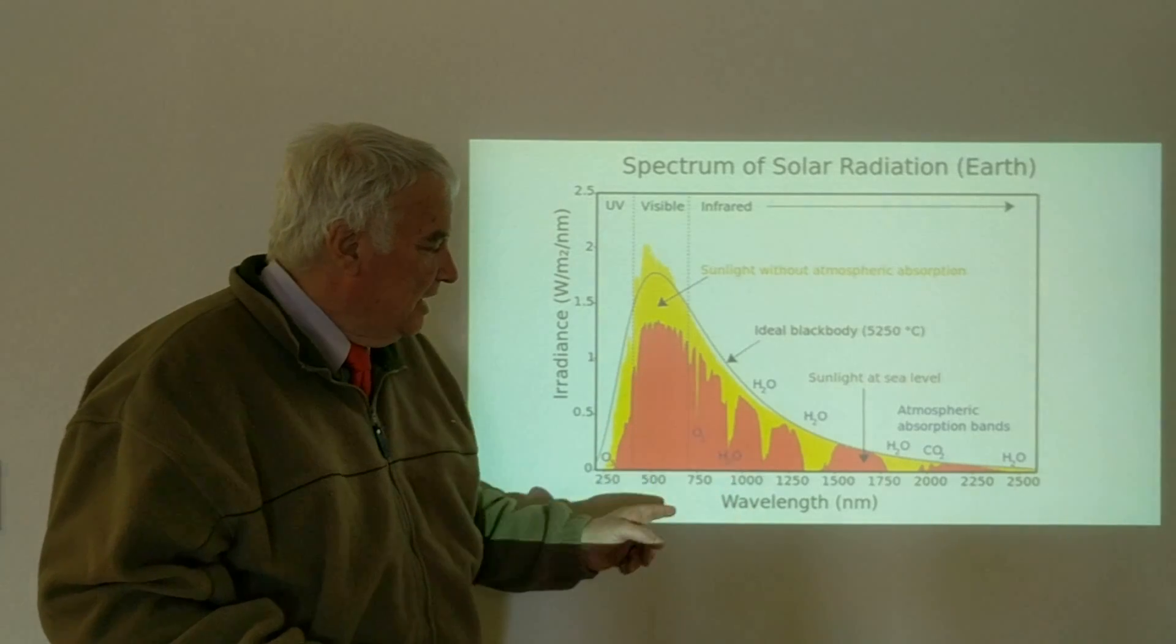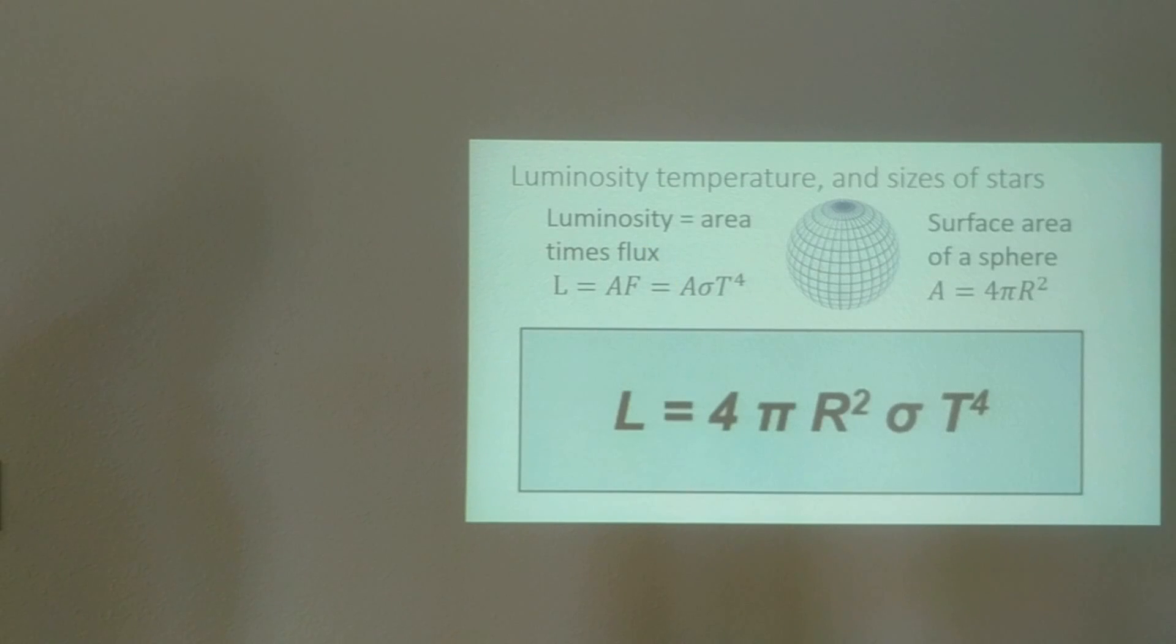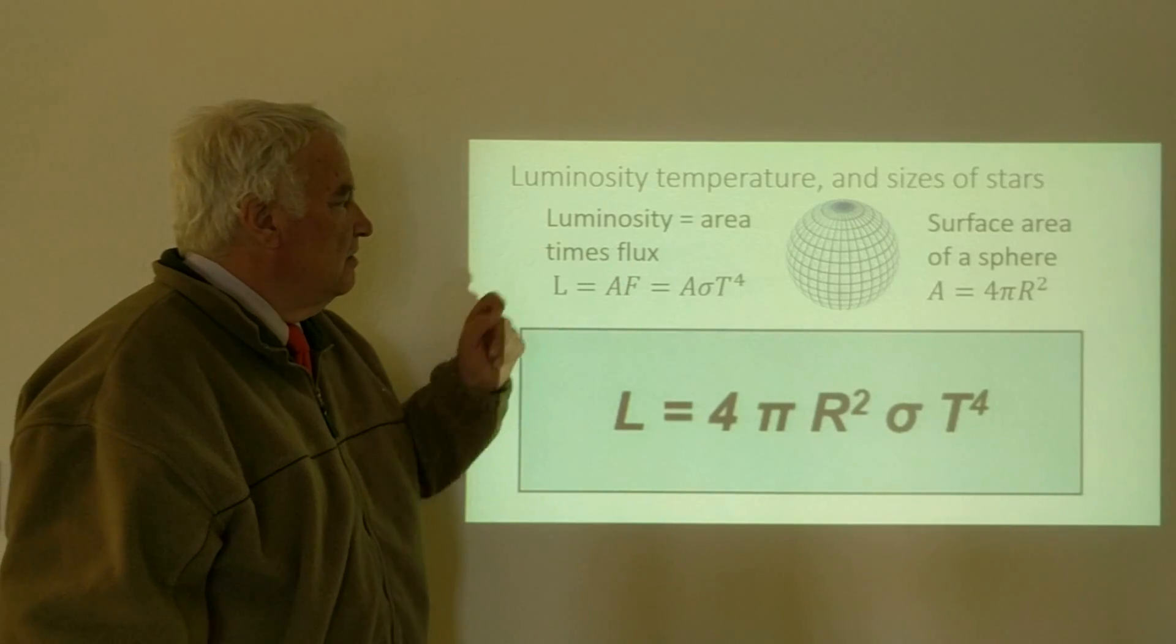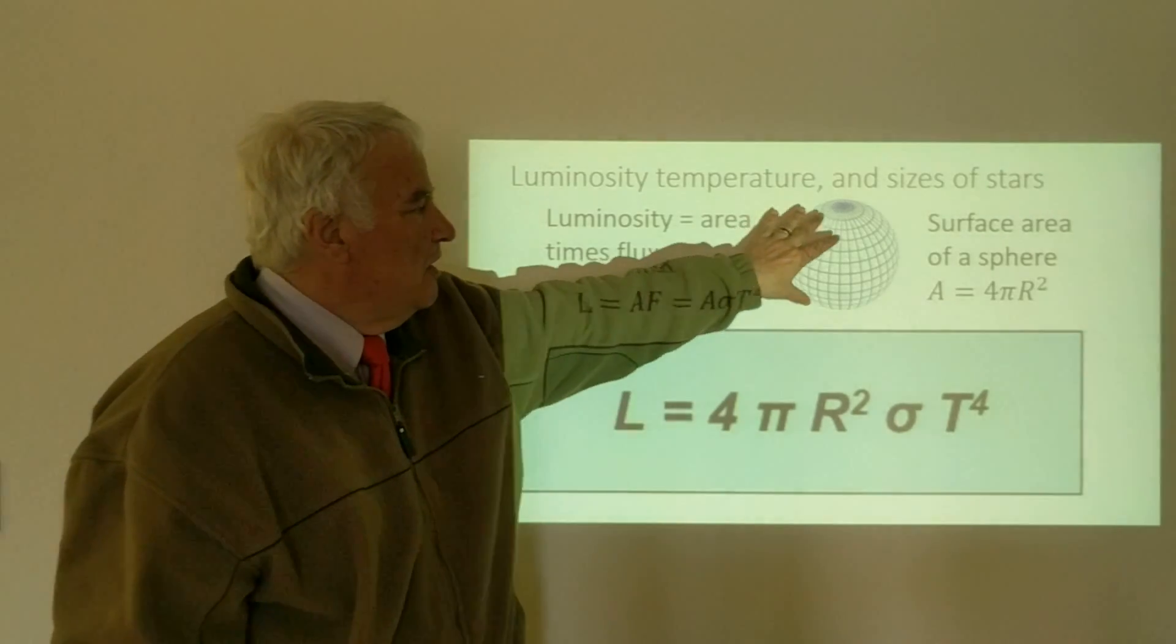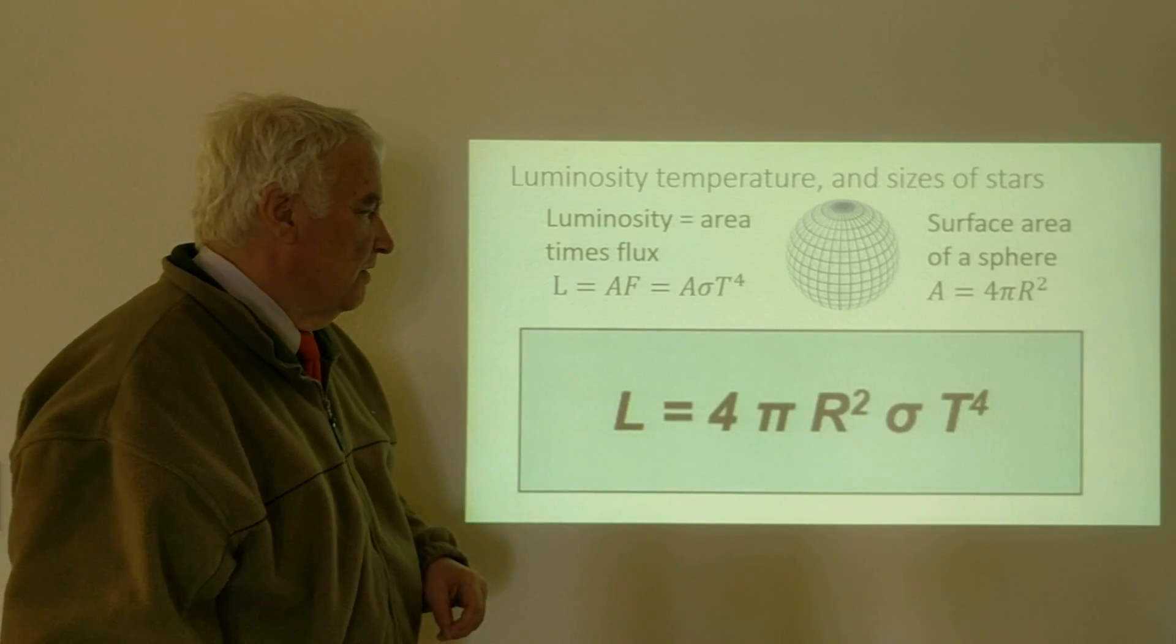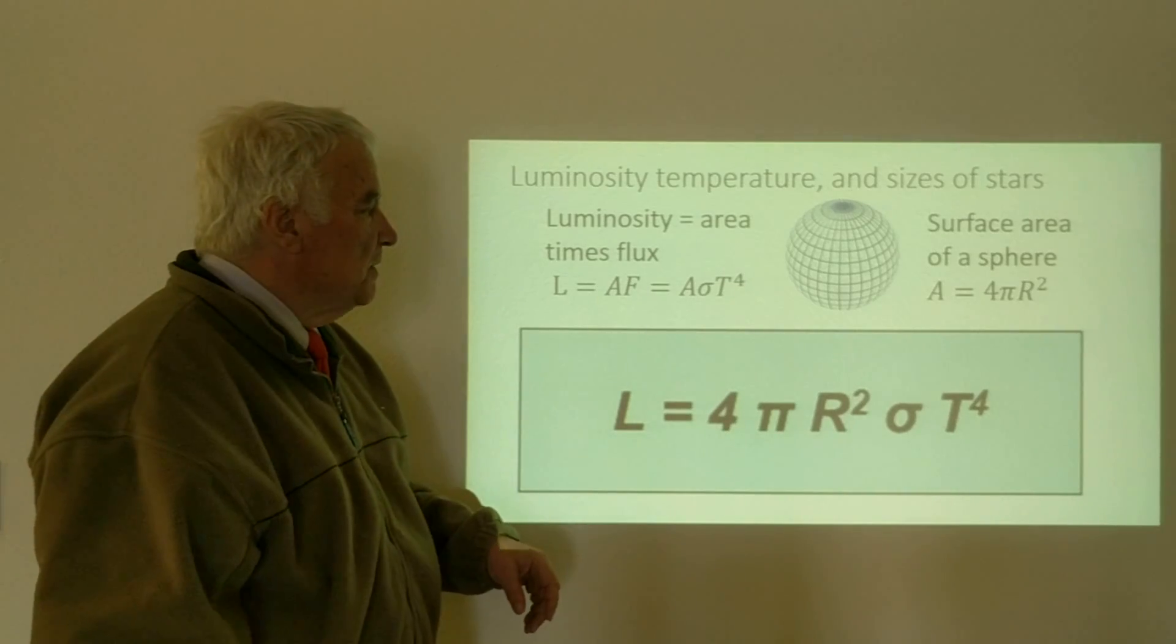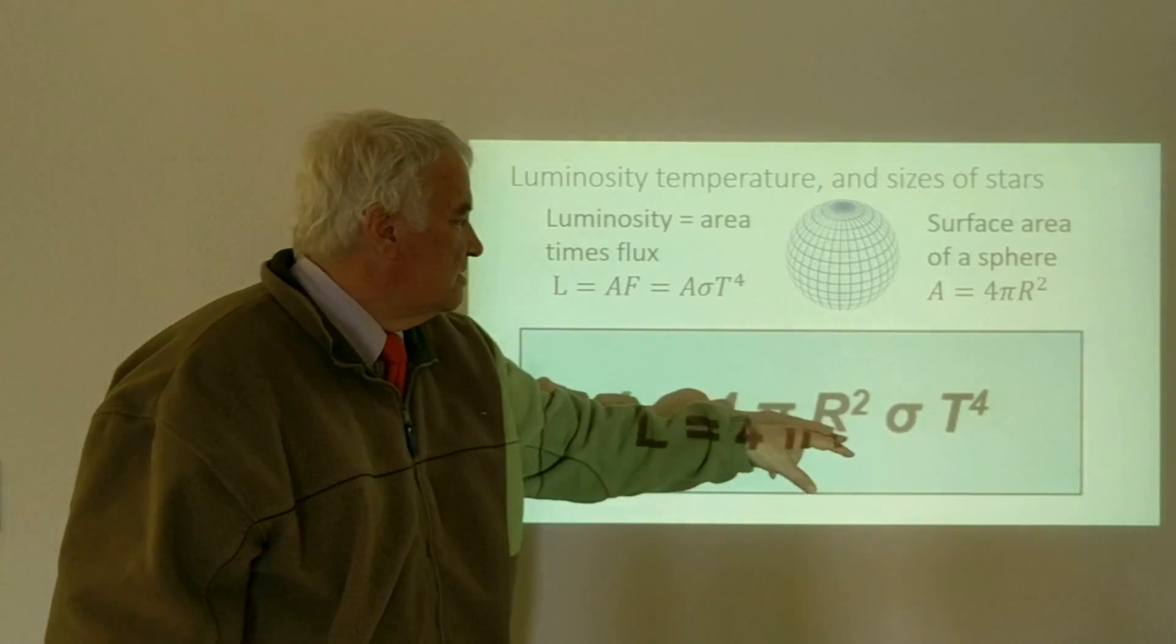Now if we consider the luminosity again, which is the total amount of energy emitted from a star, it's the area times the flux of light coming from the surface. The surface area of a sphere is 4πr², where r is the radius of the sphere. So thinking back to the Stefan-Boltzmann law, σT⁴, which is the flux times the area 4πr², gives us the luminosity of the star.